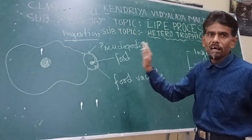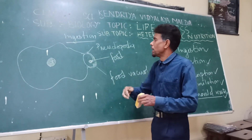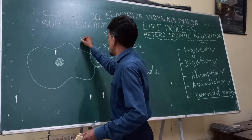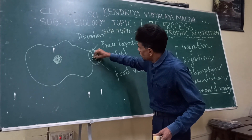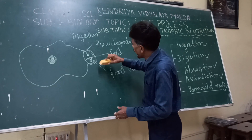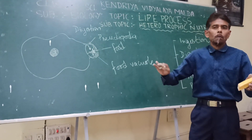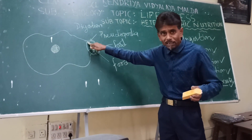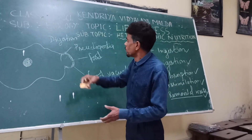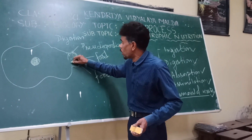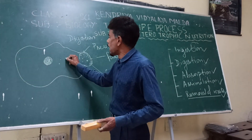Ingestion is also called taking or engulfing the food material. Once ingestion is completed — the food material is now inside the cell — the process of digestion starts. During digestion, chemicals secreted within the cell help to break down the complex food material present in the engulfed food. This complex material is digested and converted into the simplest form, which can be readily absorbed.